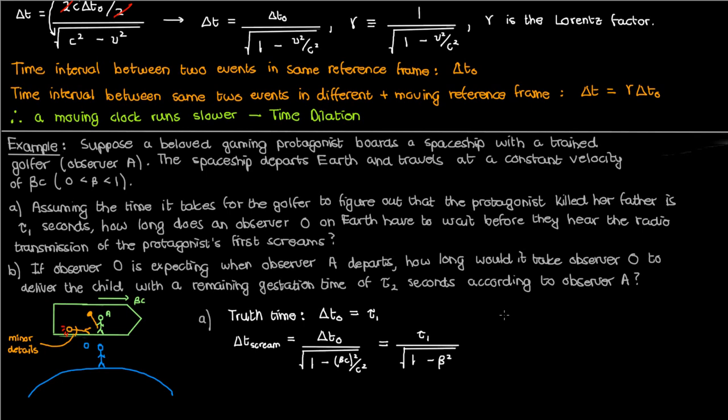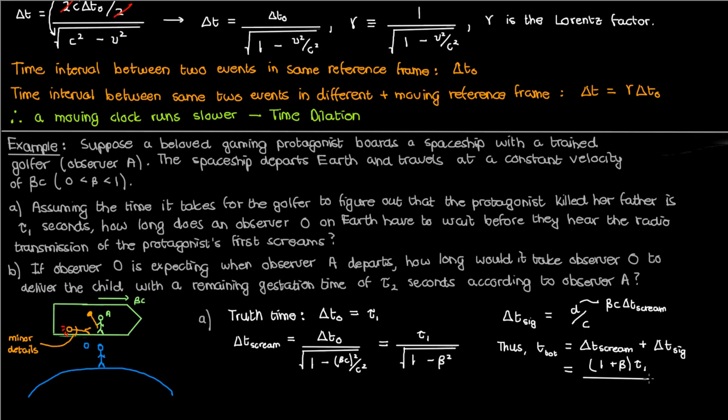We also need to calculate the time delta_t_sig for the signal from the first screams to reach observer O. Since this is a radio signal, it travels at the speed of light. The distance d traveled equals beta*c * delta_t_scream. Therefore the total time is delta_t_scream + delta_t_sig = (1 + beta) * tau_1 / sqrt(1 - beta²).